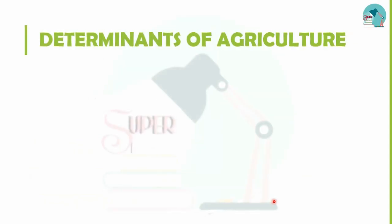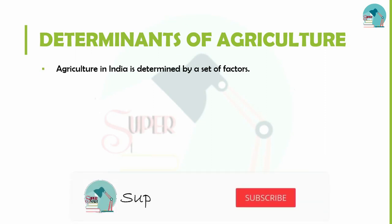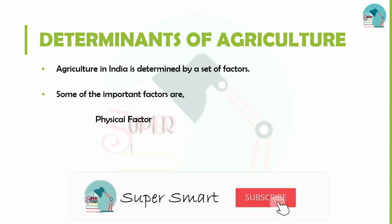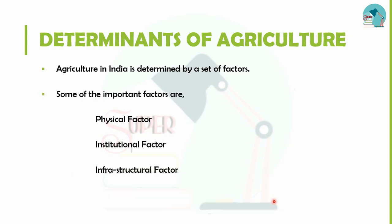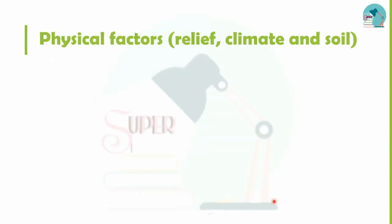Next is agriculture determinants. The determinants in agriculture are its key factors: physical factors, institutional factors, infrastructural factors, and technological factors — these are the four main factors.